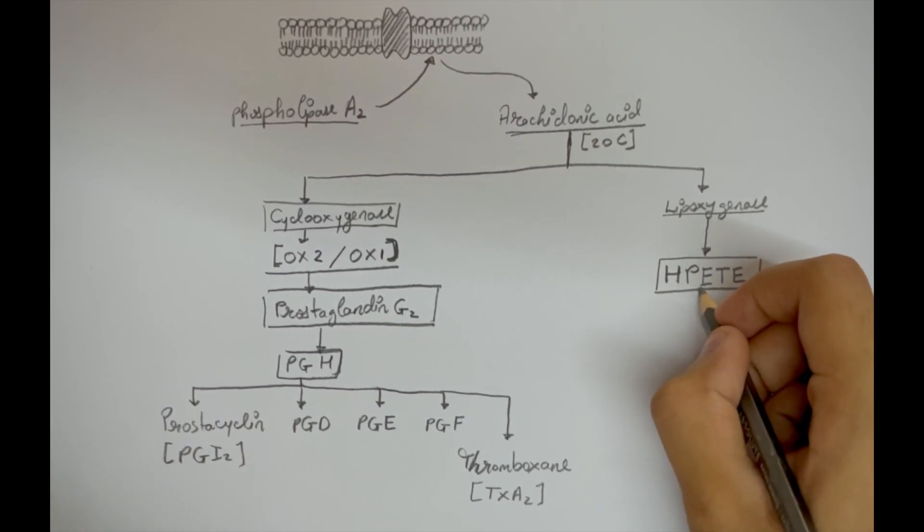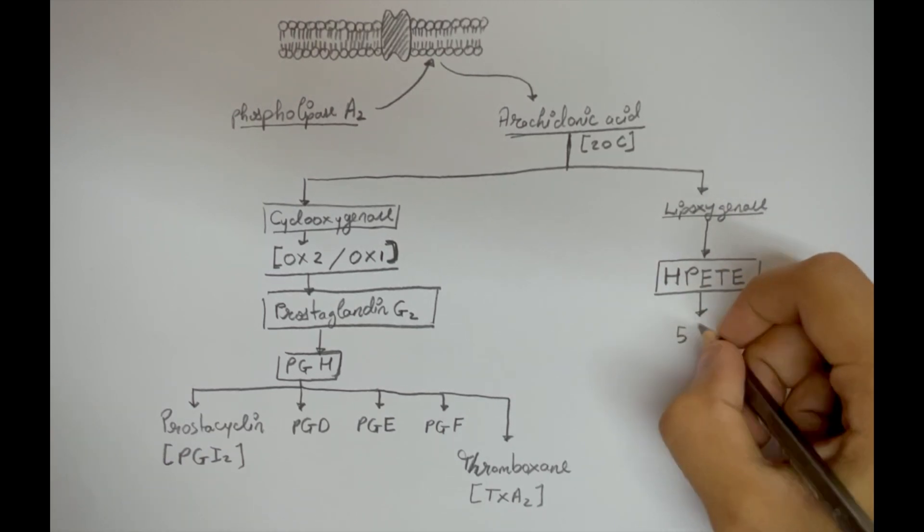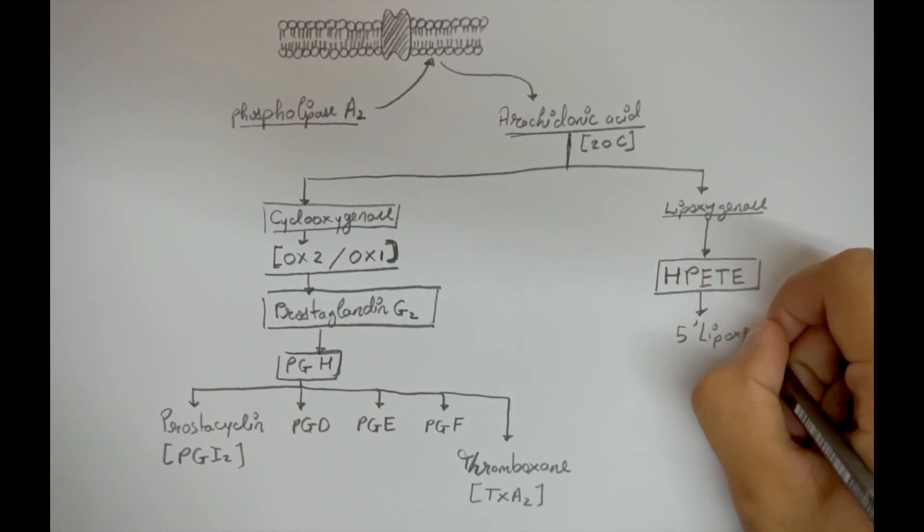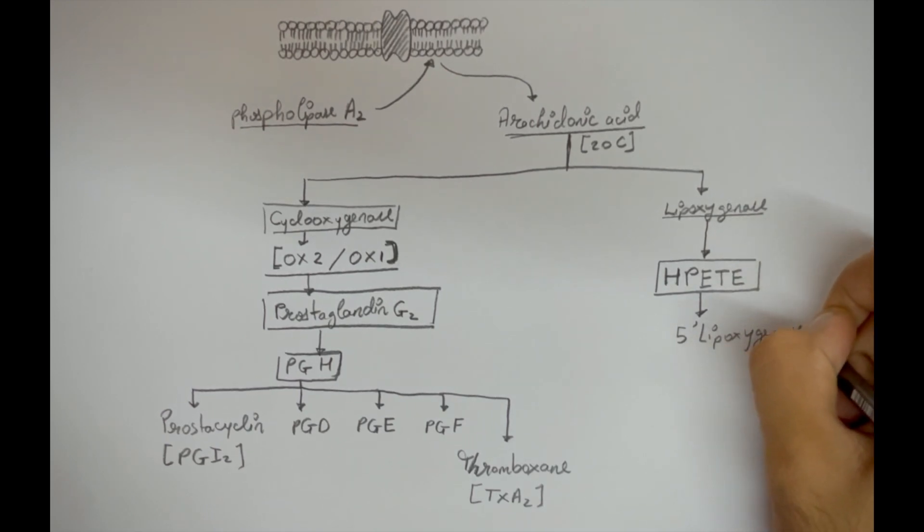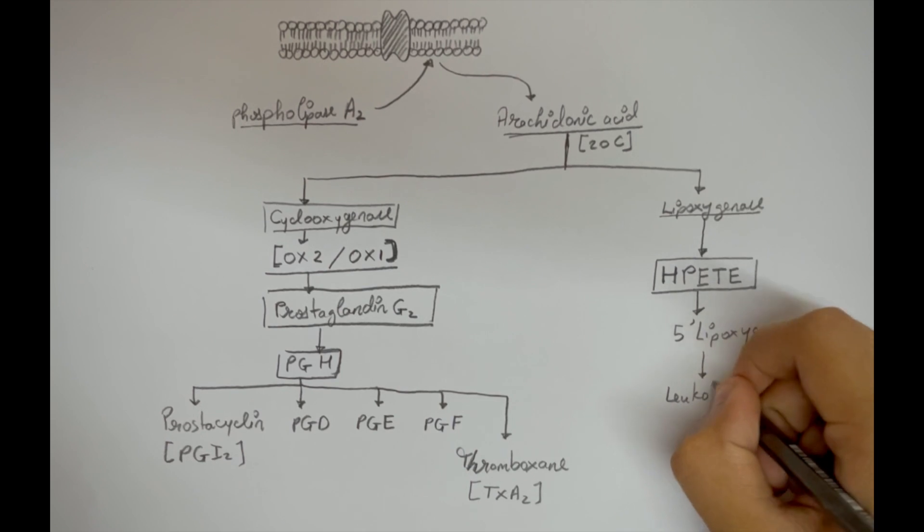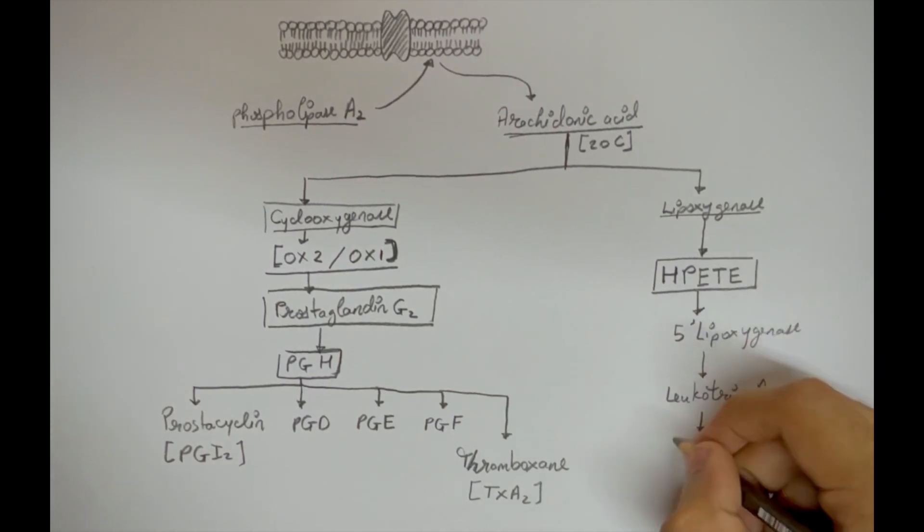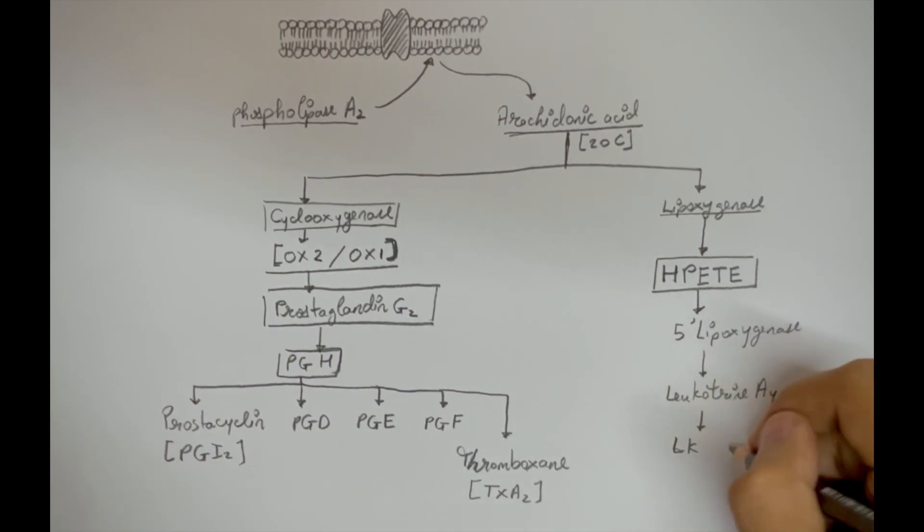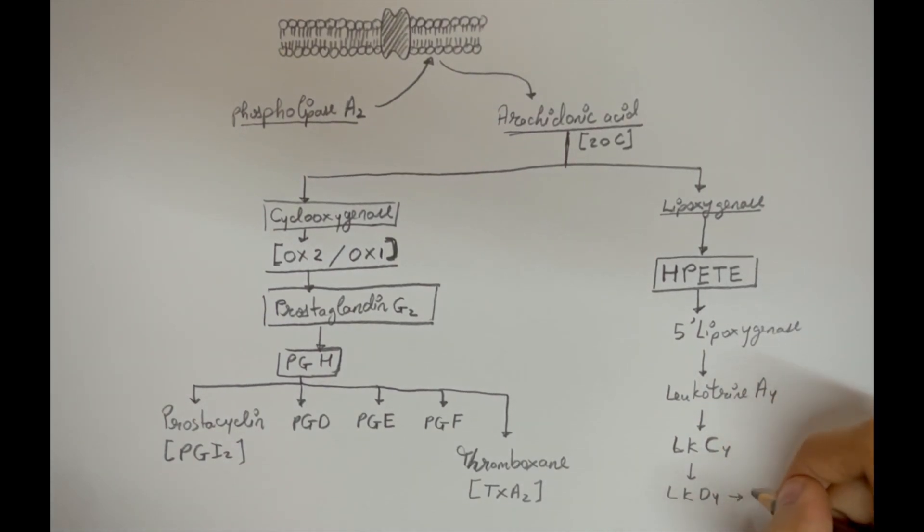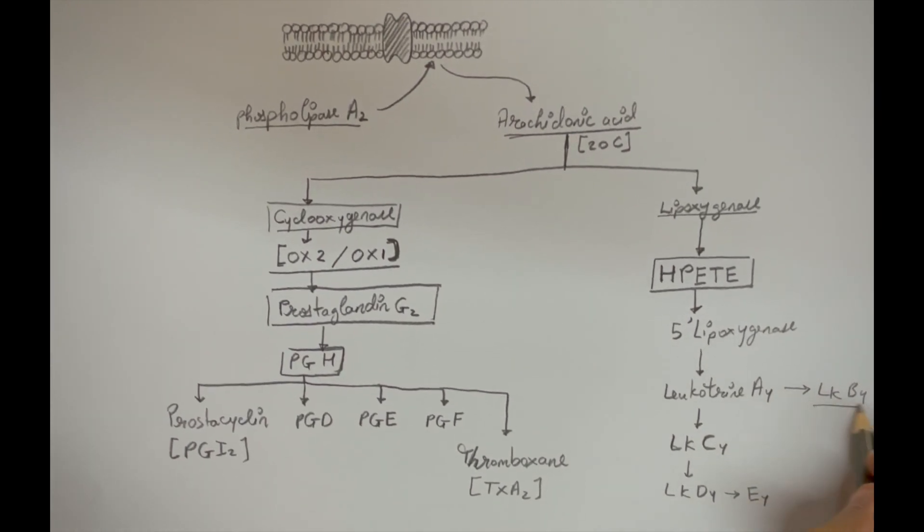This HPETE can be acted upon by vivid enzymes. The first one is 5-lipooxygenase. This 5-lipooxygenase converts HPETE into leukotrienes. The first one is leukotriene A4, which further collapses into leukotrienes C4, B4, and E4. Leukotriene A4 can also convert into leukotriene B4.